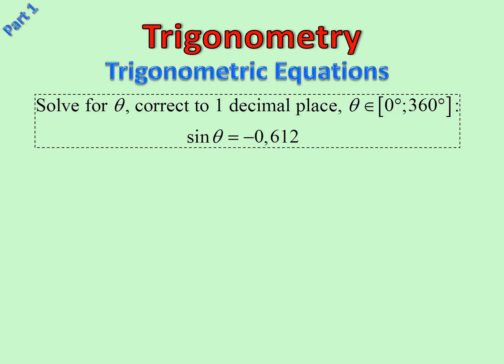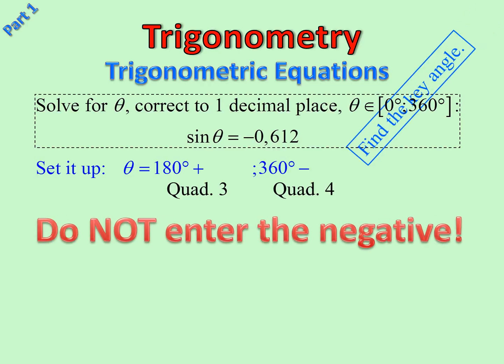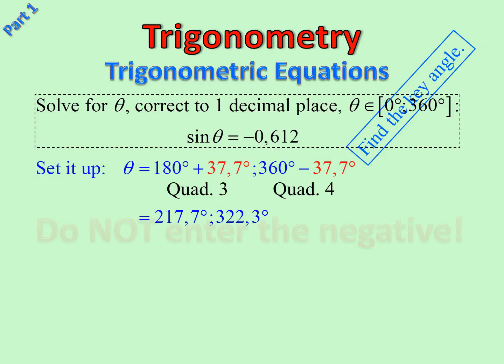Here we are. Sin θ = -0.612. So you try and pause as you go. Here we are. Set it up. Notice I've done that before I even look at the calculator. Now, of course, the important thing: find the key angle. Do not enter the negative.